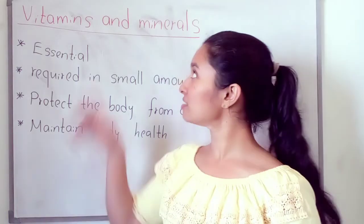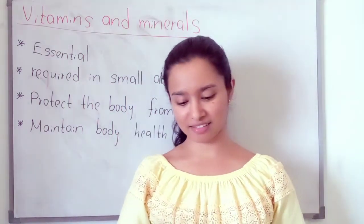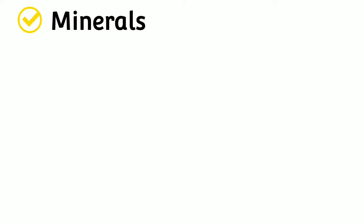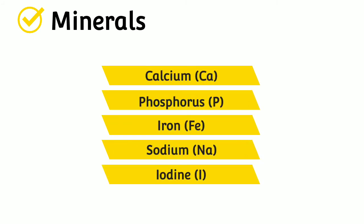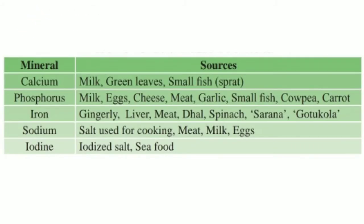Now let's look at minerals. The main minerals we need are calcium, phosphorus, iron, sodium and iodine. Calcium is found in milk, green leaves and small fish like sprats. Phosphorus is found in milk, eggs, cheese, meat, garlic, small fish, coffee and carrots.